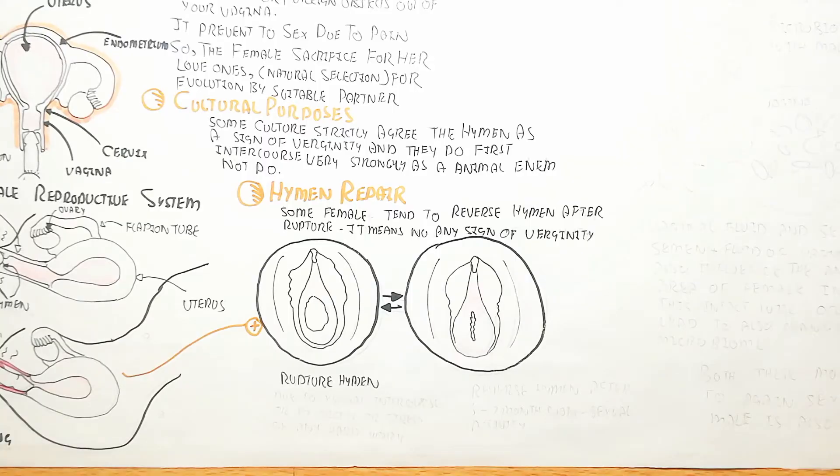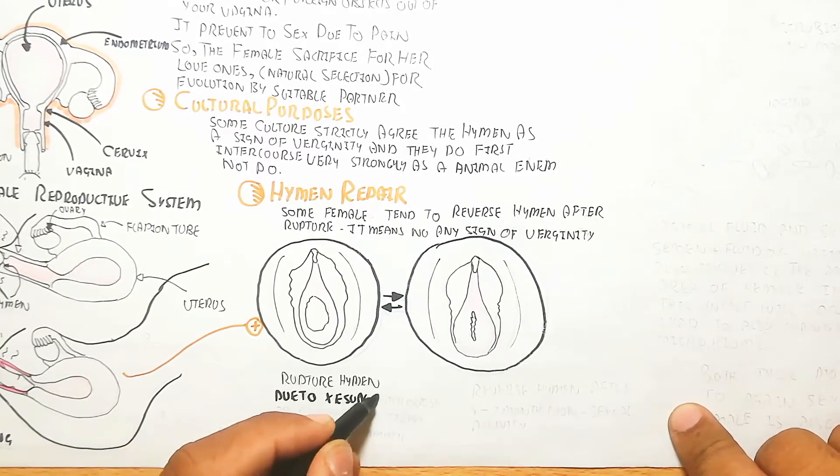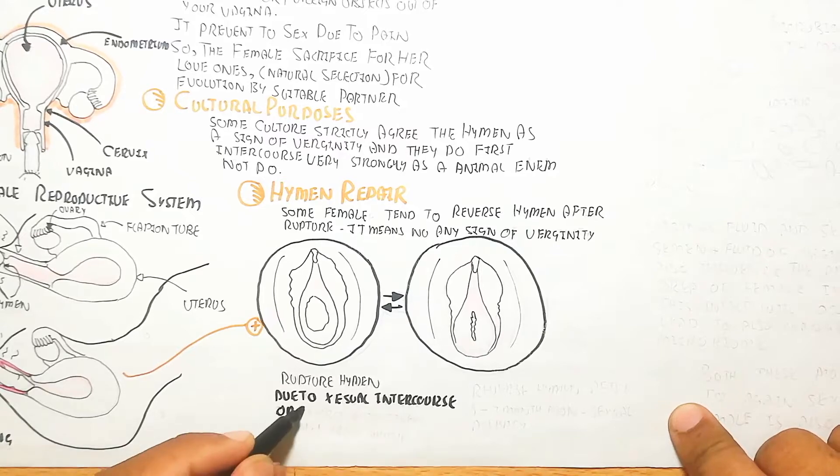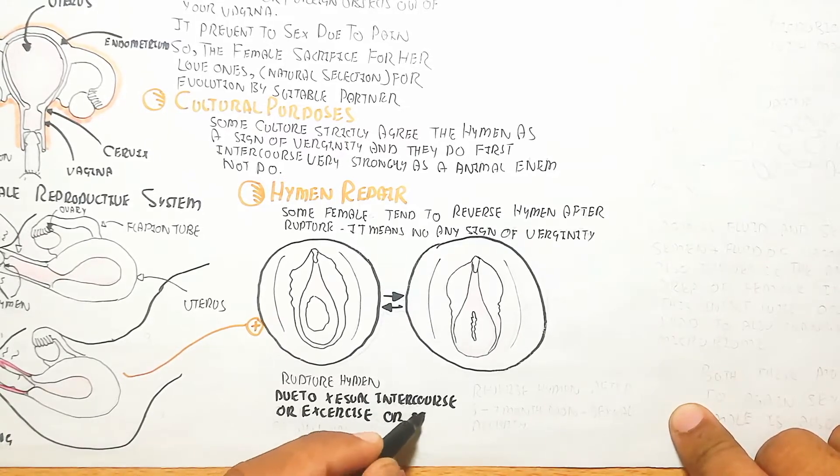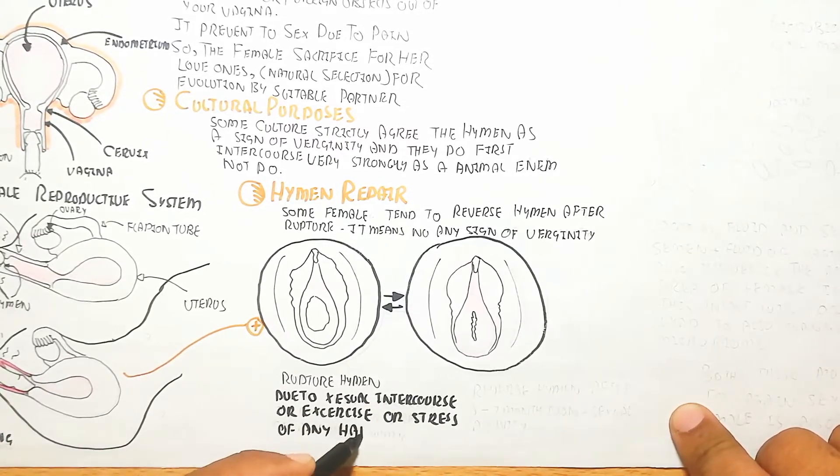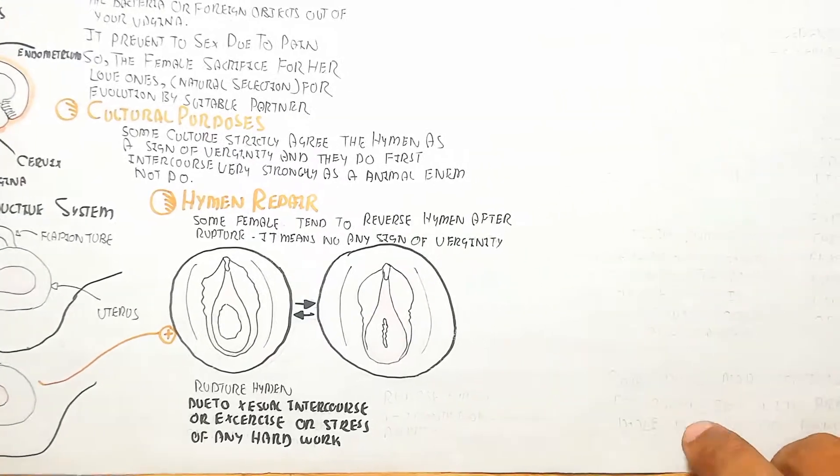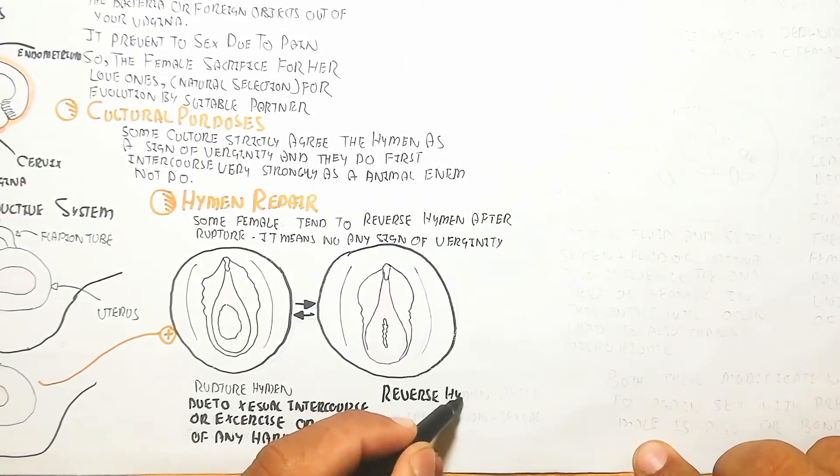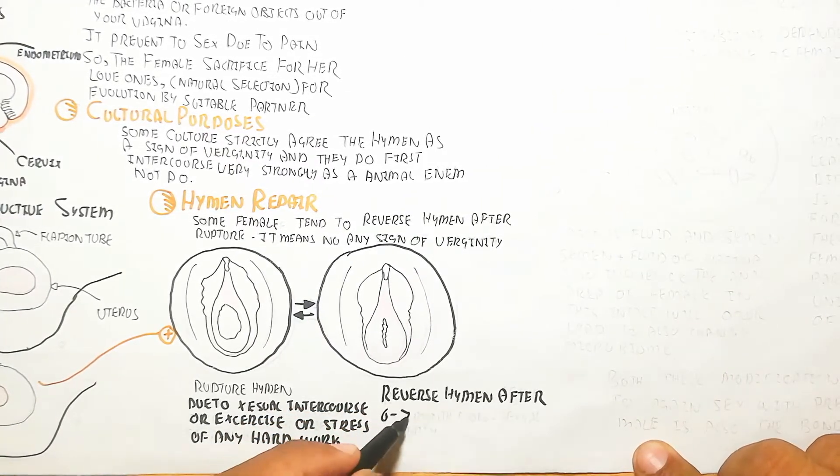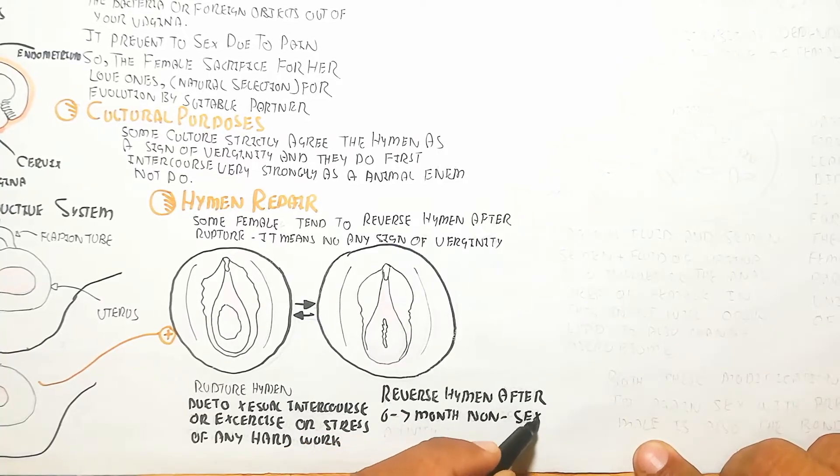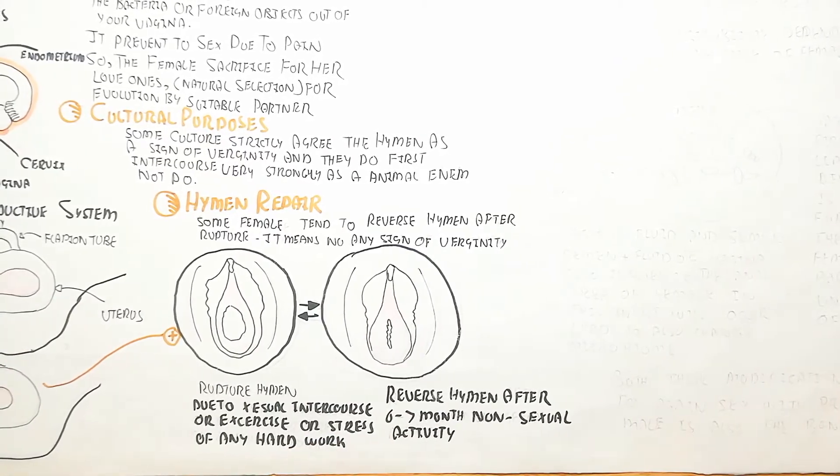Due to sexual intercourse, exercise, or stress from any hard workout, the hymen can rupture. This diagram shows the rupturing of the hymen. The hymen can reverse after six to seven months of non-sexual activity, but some females can achieve this while others cannot.